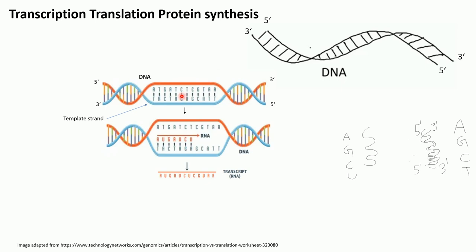Now we have a DNA molecule shown here. I'll show you how messenger RNA is synthesized from DNA. First, look at the structure of the DNA: one strand runs from five prime to three prime, and the other from three prime to five prime. The three prime to five prime strand is called the template strand, and the other is called the coding strand. During transcription, RNA polymerase binds and uses the template strand to add nucleotide bases.